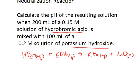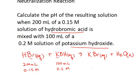Now we want to determine the pH of the solution. To do that, you have to recognize what ends up in the resulting solution. You have to look at how much of each reactant you have and what their concentrations are. We have 200 milliliters of a 0.15 molar solution of hydrobromic acid and 100 milliliters of a 0.2 molar solution of potassium hydroxide.